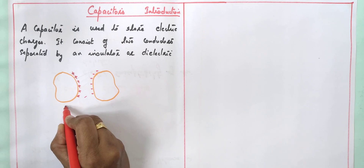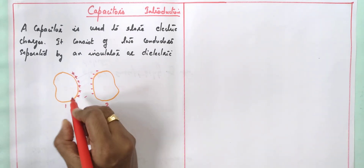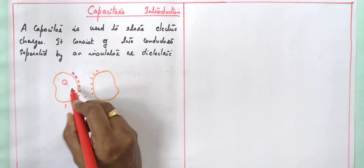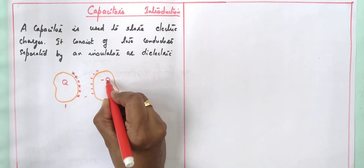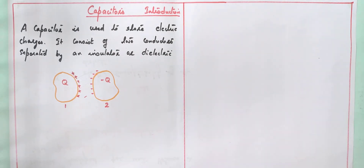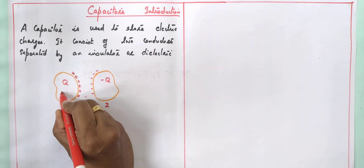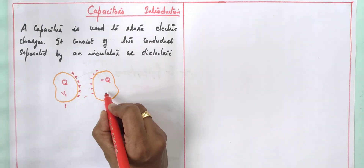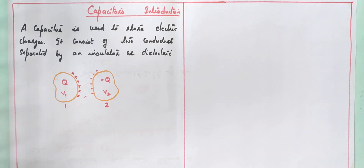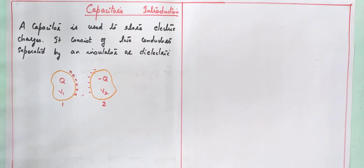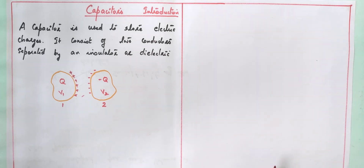These are the two plates — plate one and plate two. Let Q be the charge stored in the first plate; the second plate is negatively charged and has charge minus Q. Let V1 be the potential of the first plate and V2 be the potential of the second plate. As charge stored in the plates increases, the electric field between the two conductors increases, and hence the potential difference between them also increases.